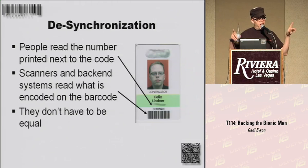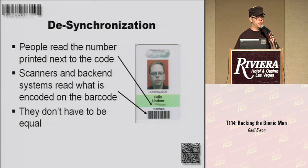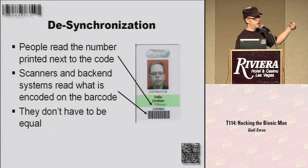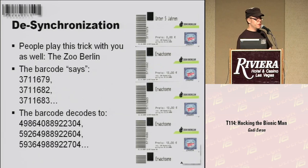A technique I call desynchronization: people do not realize that the barcode and the digits printed below the barcode have nothing to do with each other except your assumption that the printed number is what the barcode says. That's just an assumption, and it can be exploited. You can change the number or the barcode and leave the other one intact. For example, at the zoo, tickets show shorter numbers next to the barcode, but when you decode the barcodes you see the longer actual numbers, and the leading digit says whether you need to pay or not.